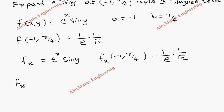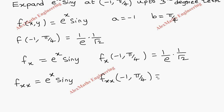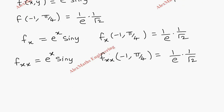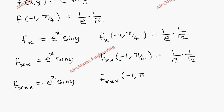Now fxx. Once again e power x is e power x, sin y is constant. Then fxx at minus 1 comma pi by 4, we again get the same value: 1 by e into 1 by root 2. Then fxxx is nothing but e power x into sin y, so about the point minus 1 comma pi by 4, its value is again 1 by e into 1 by root 2.